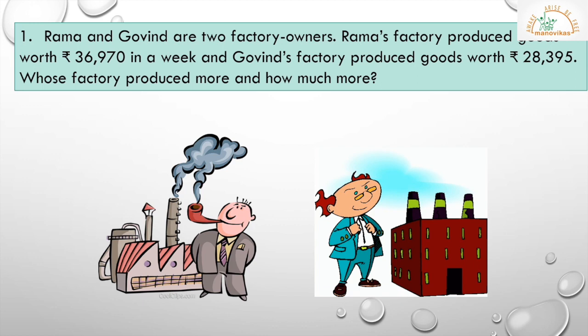Here is the first problem. Rama and Govind are two factory owners. Rama's factory produced goods worth Rs. 36,970 in a week, and Govind's factory produced goods worth Rs. 28,395. Whose factory produced more and how much more? We are comparing two factory owners to find whose factory produced more goods and by how much.